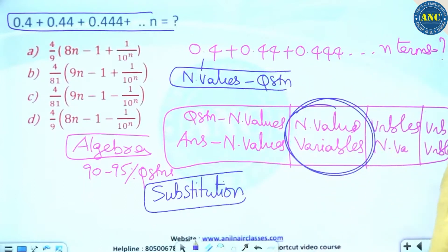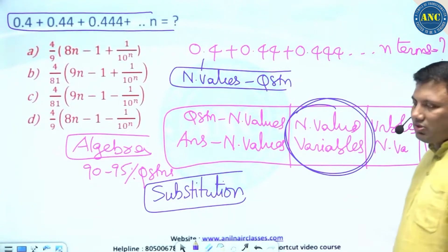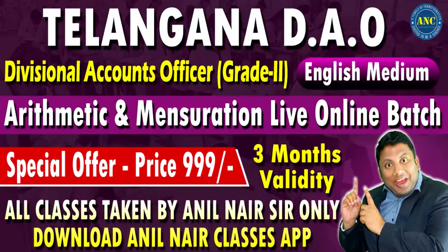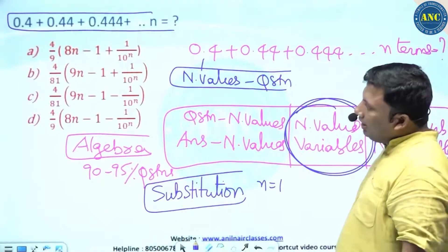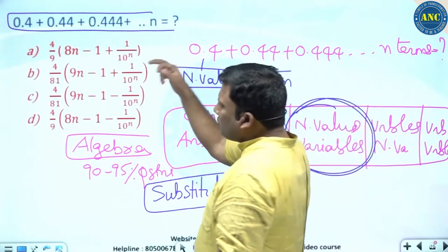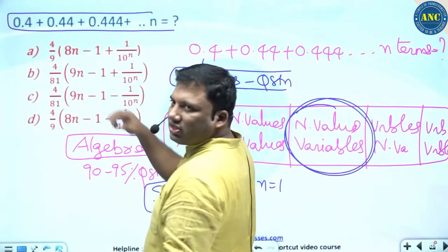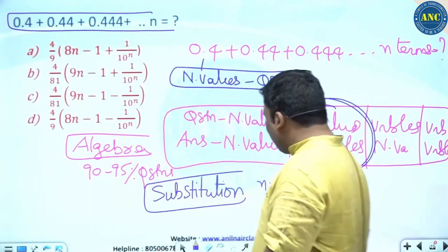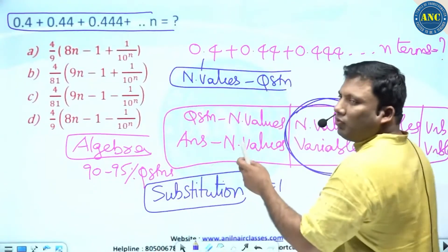Whenever you get a question under this category — question contains numerical values and answer contains variables — the best method to solve it is by using substitution. Substitute n equal to 1.